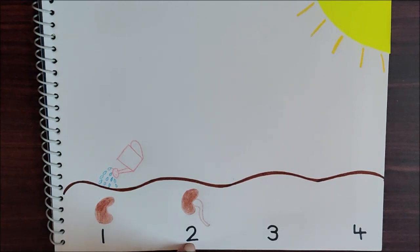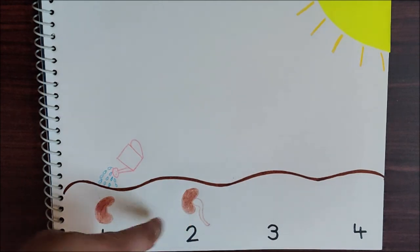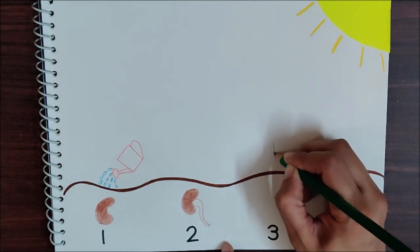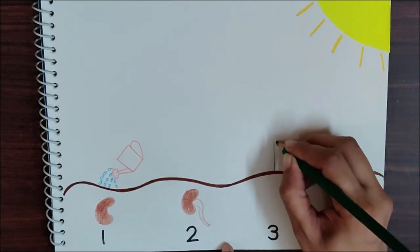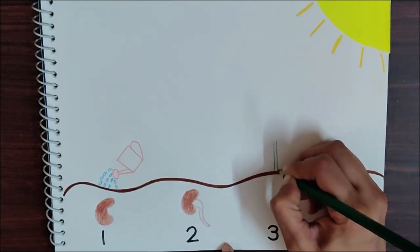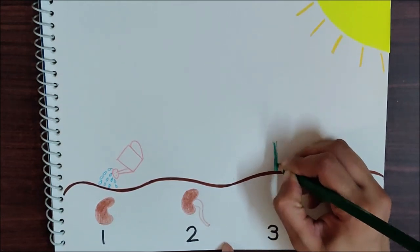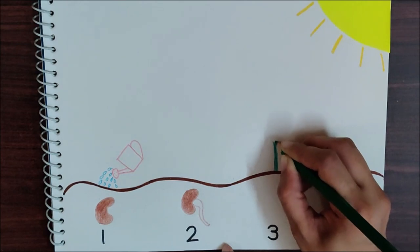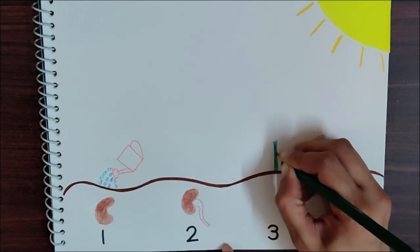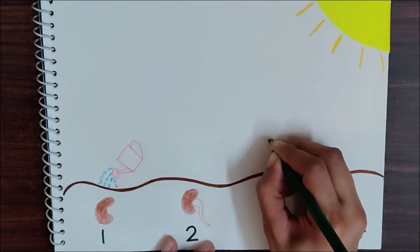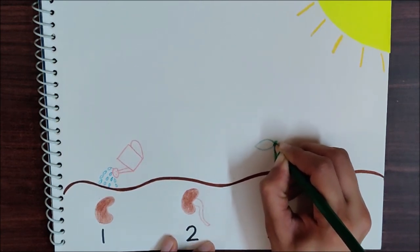Now, after some days, the shoot will develop into roots. So here for number 3, I am drawing a stem. This is a stem. And these are the leaves.